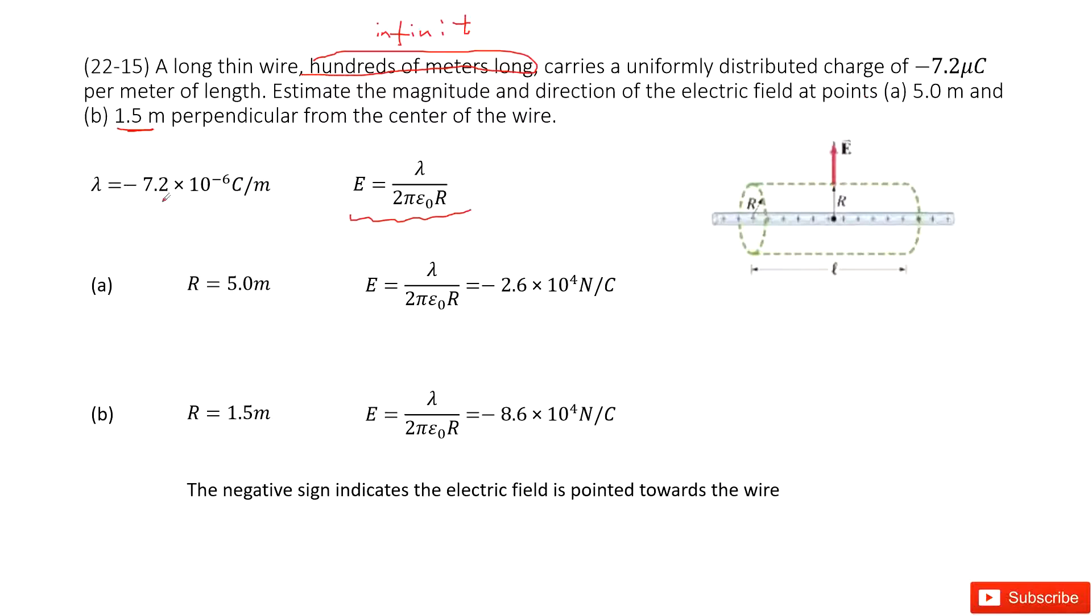And we can know the charge density is given. It is negative charge, -7.2 microcoulombs per meter.